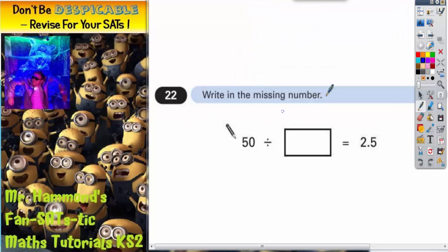Question 22, writing the missing number. So 50 divided by some mystery number equals 2.5.